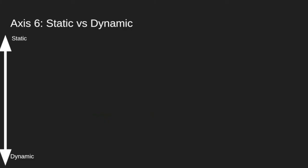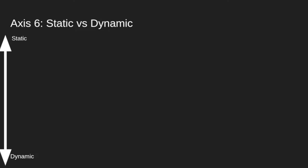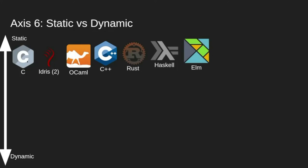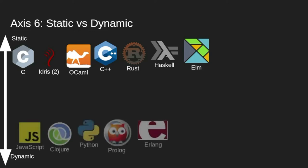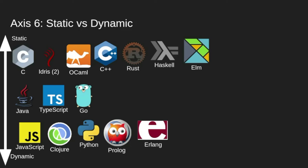Let's continue with the axis but this time with types. We can categorize types as static versus dynamic. Static means the compiler at compile time knows — or determines via type inference — which type every variable has and uses that information for code generation. TypeScript just erases all the types but still knows them all. On the static side we have most compiled languages: C, OCaml, Haskell, Elm — even without specifying types, the compiler knows them. On the other end, JavaScript, Clojure, Python, Prolog, and Erlang do all type checking at runtime because there's only one type and you never know exactly what you get. In the middle ground: Java, TypeScript, and Go.